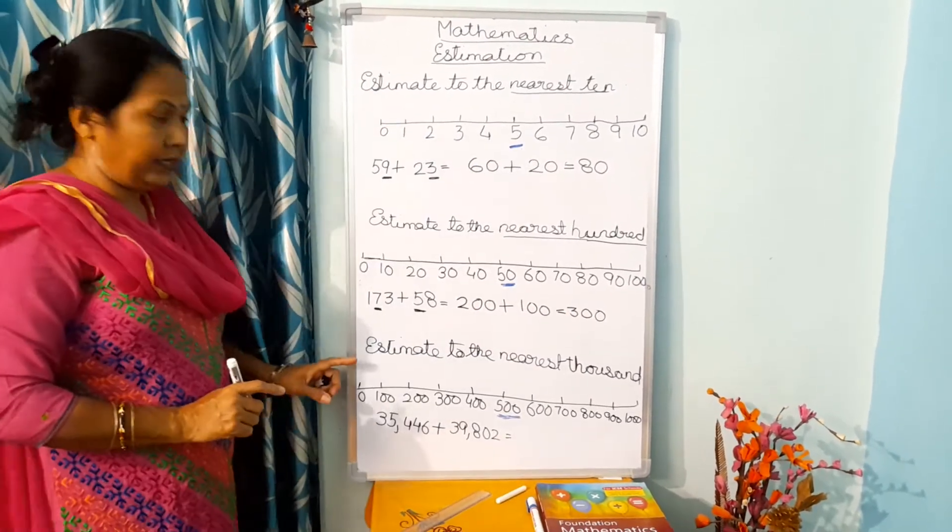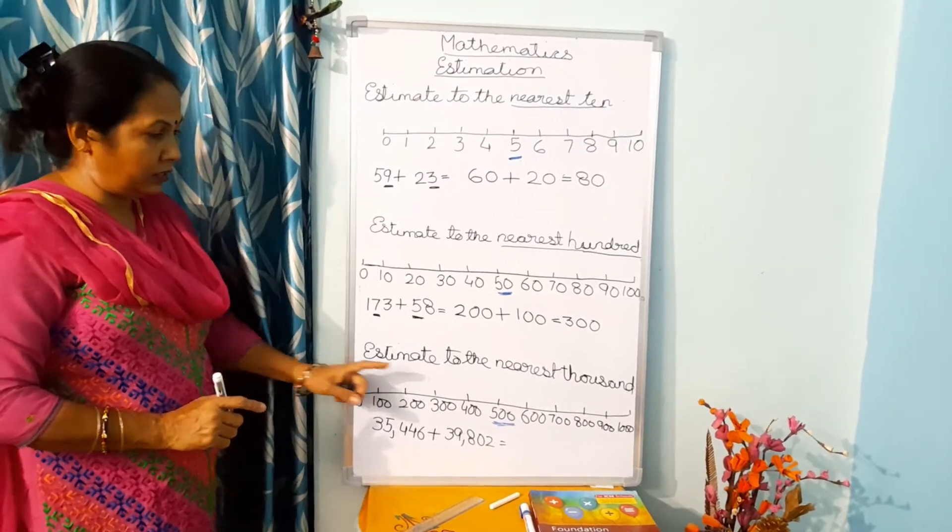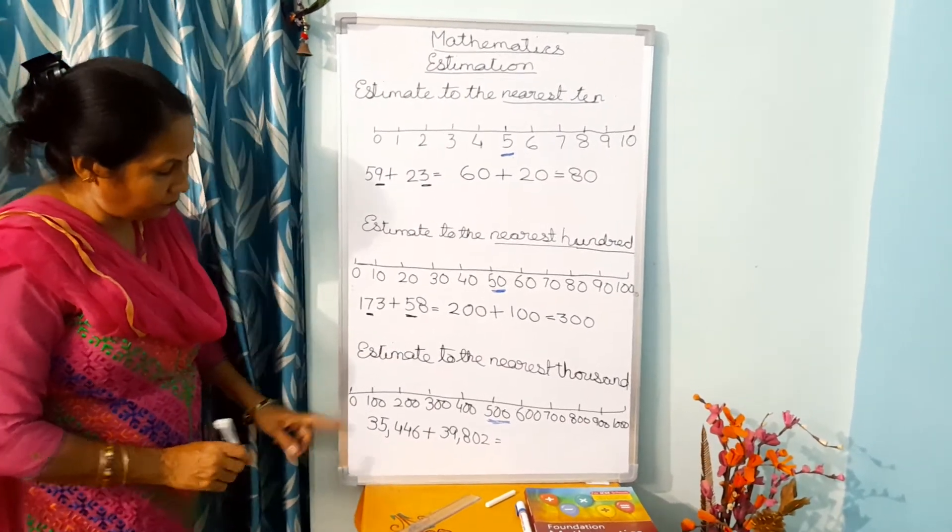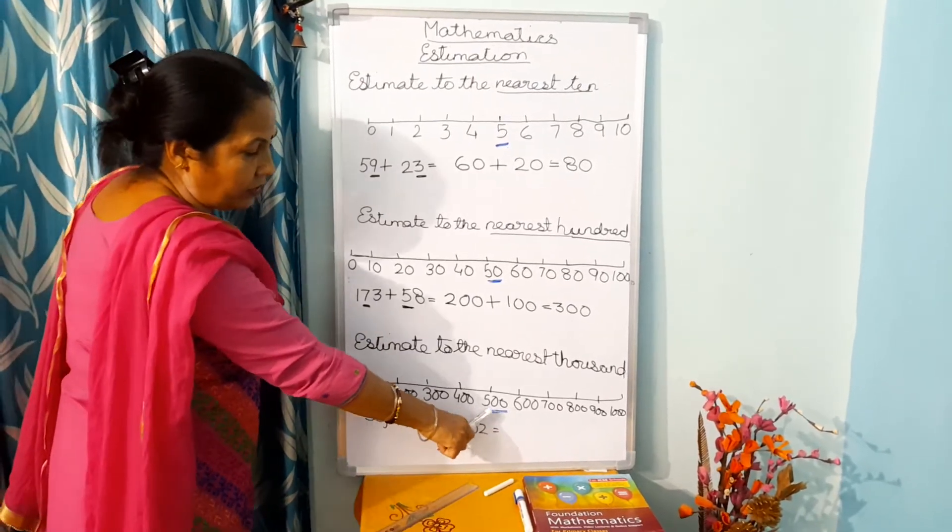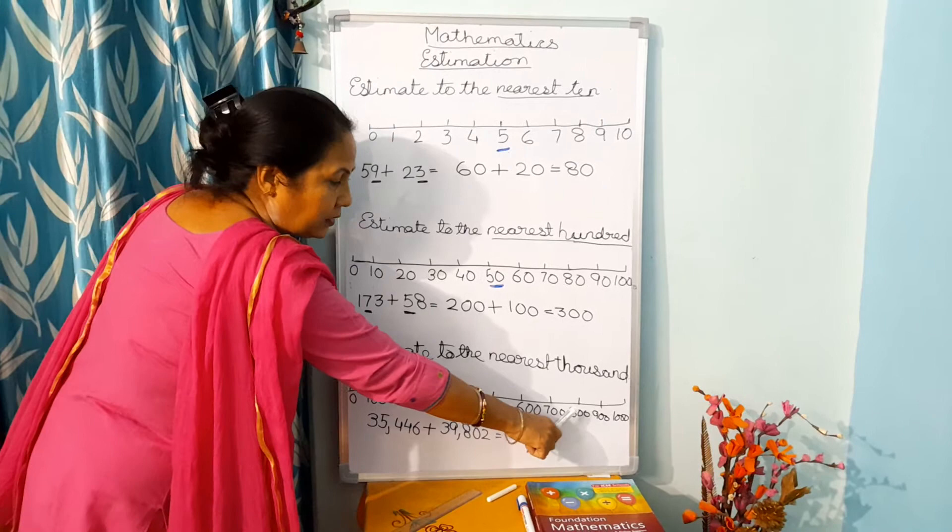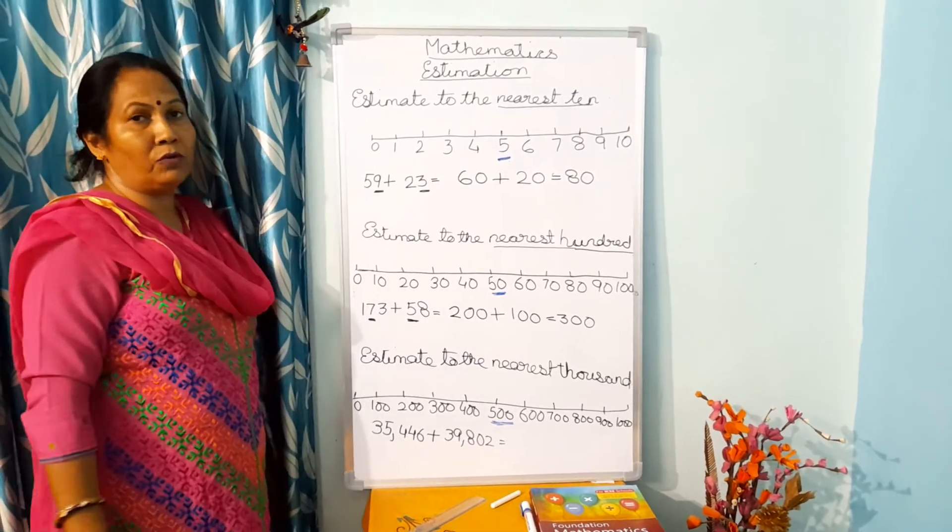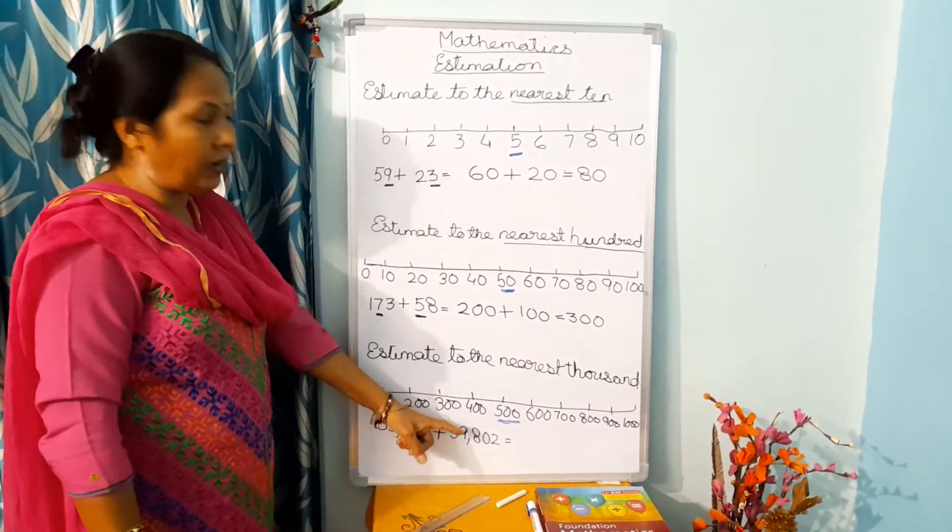Now next one is estimate to the nearest 1000. You will see the number line: 0, 100, 200, 300, 400, 500, 600, 700, 800, 900, and 1000. Same thing you have to see here.